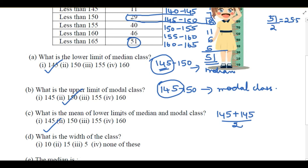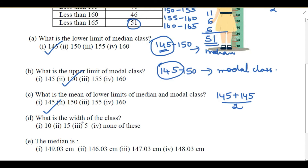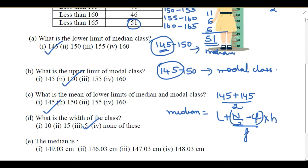The next question asks for the width of the class, i.e., the class size. Class size is found by subtracting two consecutive lower limits: 145 minus 135 = 5. The last question asks for the median. The median formula is: Median = L + [(N/2 − cf) / f] × h.